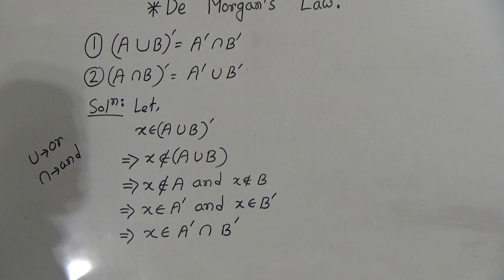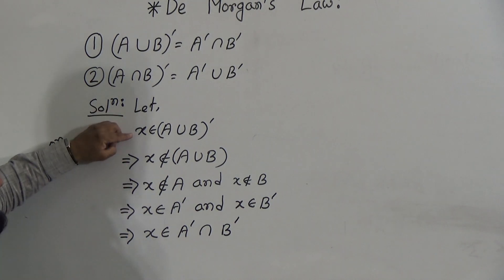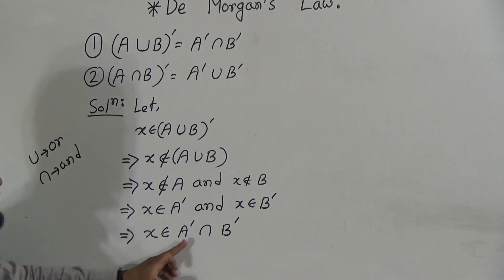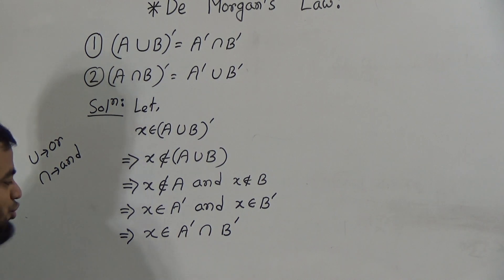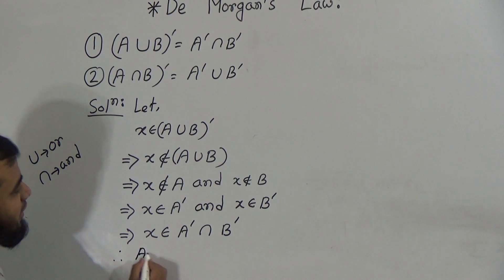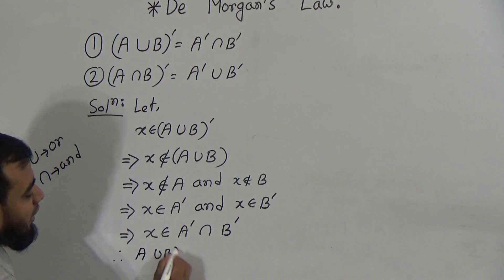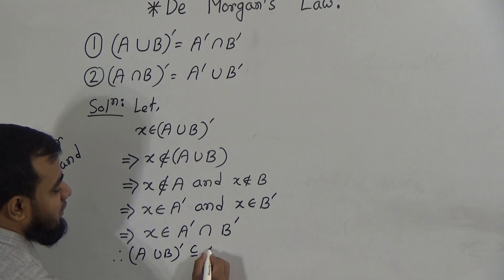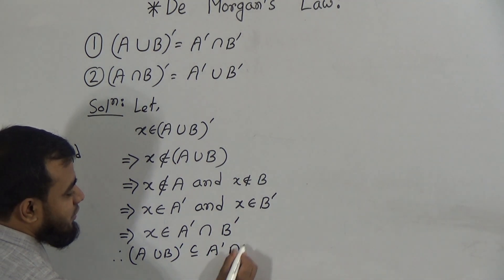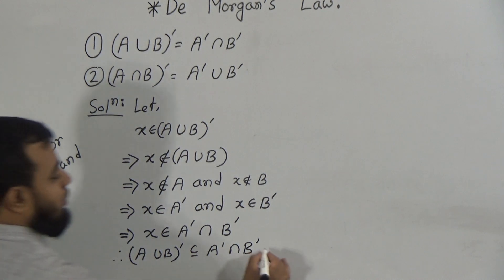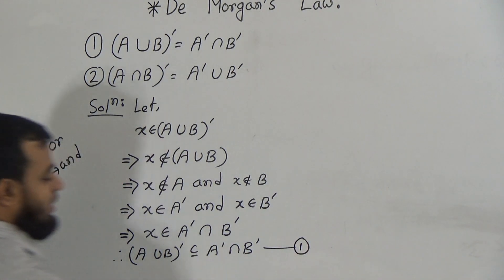We assumed that x belongs to A union B whole prime and we proved that x belongs to A prime intersection B prime. So we can say: therefore, A union B whole prime is a subset of A prime intersection B prime. This is our equation number one.